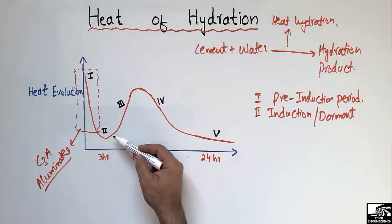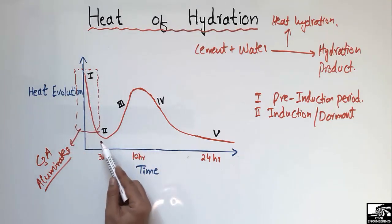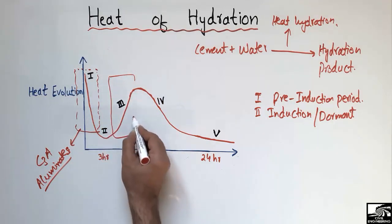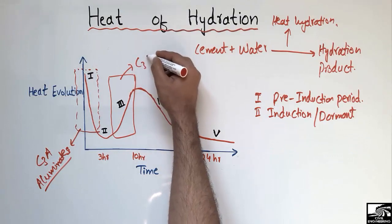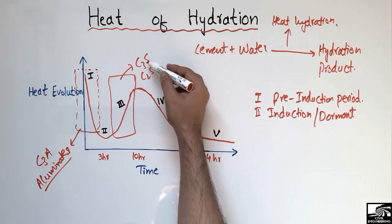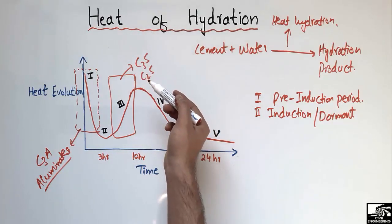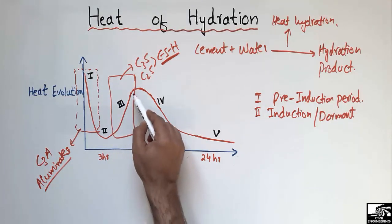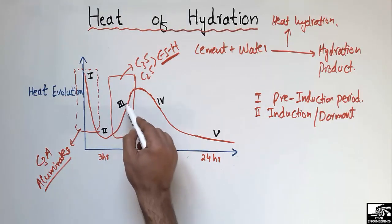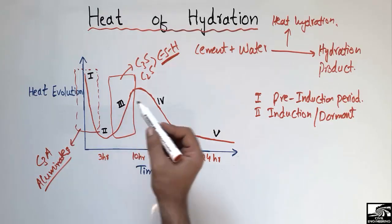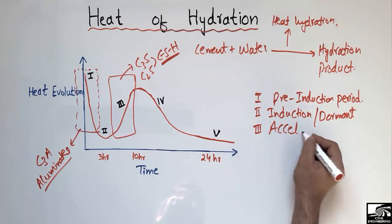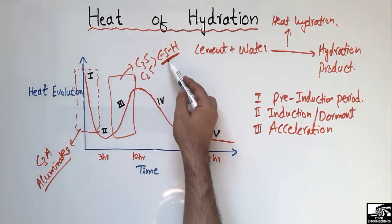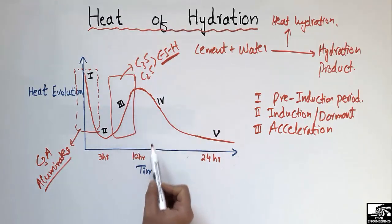After the dormant period, the heat evolution first decreased and then starts increasing again. It is increasing because C3S and C2S — these two chemical compounds — now start reacting with water, producing calcium silicate hydrates (CSH), which are the most important strength products. This increasing stage is known as the third period: the acceleration period, because the heat of hydration is accelerating due to the reaction of C3S and C2S with water producing CSH.